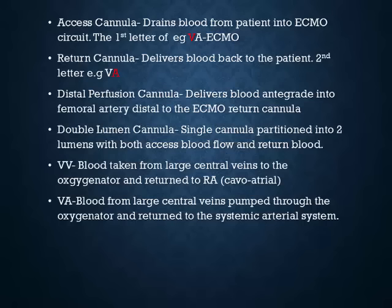The first thing is to know the definitions routinely used in the literature. The access cannula is the cannula that drains blood from the patient into the ECMO circuit — by convention, that's the first letter. So when you see VA or VV, the first letter is the access, which is venous. The return cannula delivers blood back to the patient and is by convention the second letter. The distal perfusion cannula delivers blood into the femoral artery, distal to the ECMO return cannula, so you don't lose perfusion to the lower limbs. There's also a double lumen cannula — a single cannula partitioned into two lumens with both access and return functions.